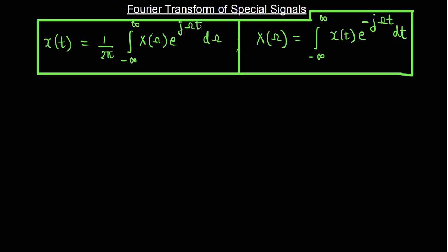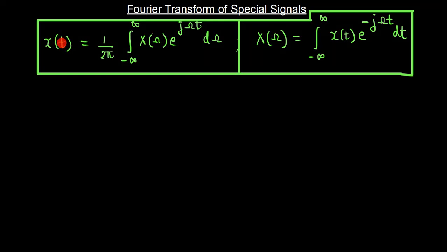In the previous module we stated different properties of continuous time Fourier transform. The equations for continuous time Fourier transforms are shown on the screen. The equation on the left is called the synthesis equation whereas the equation on the right is called the analysis equation. For this continuous time Fourier transform to exist, the integrals in both the analysis and synthesis equations must converge, otherwise the Fourier transform would not exist. The conditions for the convergence of these integrals are similar to what we have seen for the continuous time Fourier series.